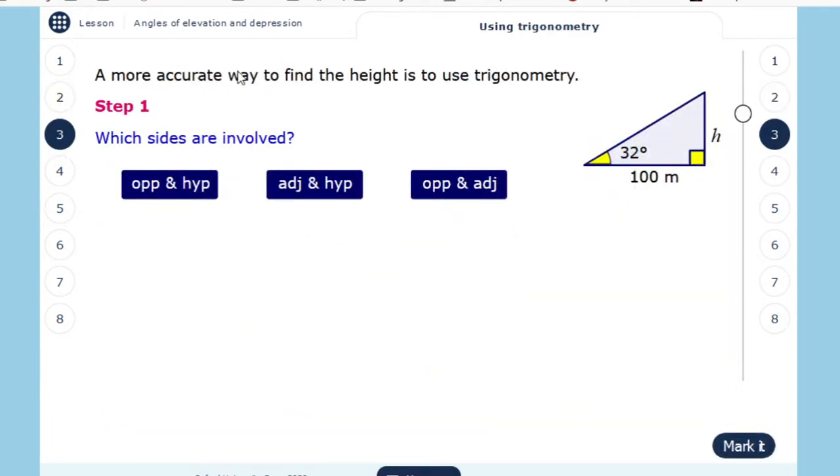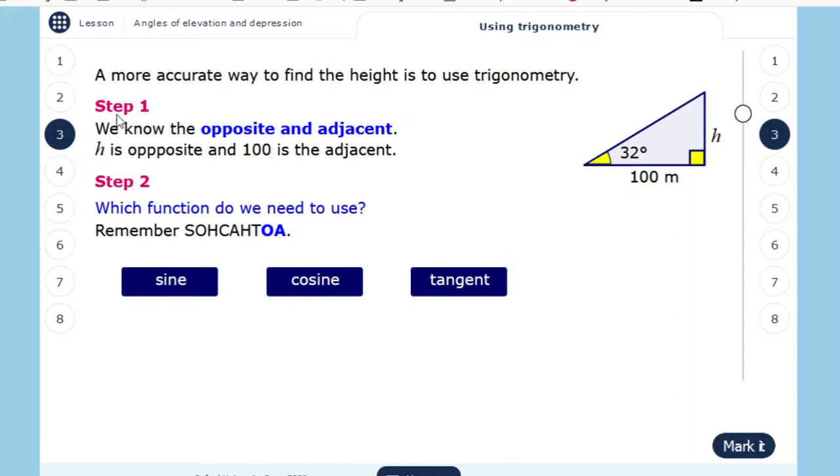A more accurate way to find the height is to use trigonometry. Now let's see that. Which sides are involved here? Obviously I have the opposite and here I have the adjacent. We know the opposite and the adjacent. H is opposite and 100 is the adjacent. Which function do we need to use now?